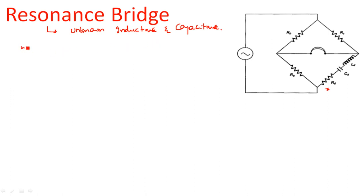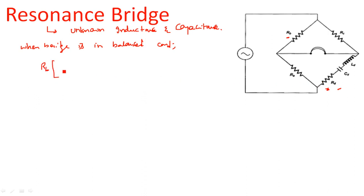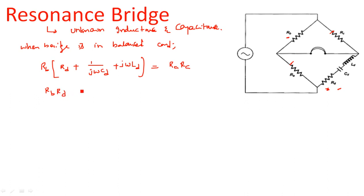When the bridge is in balanced condition, we multiply the opposite arms and equate them. So R3 multiplied by the fourth arm — which is a series combination of RLC — gives: RB × (RD + 1/(jωCD) + jωLD), and this is equal to RA × RC, since RA and RC are opposite to each other.